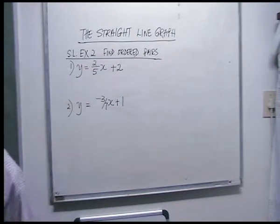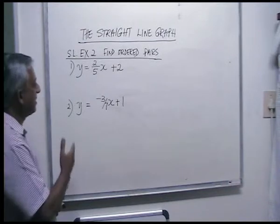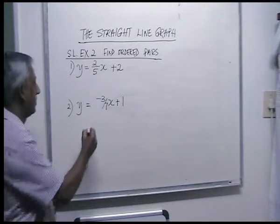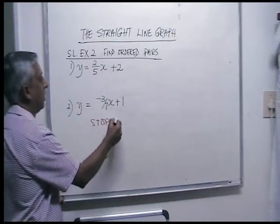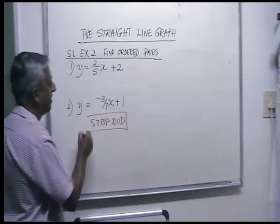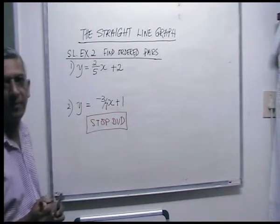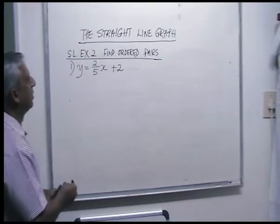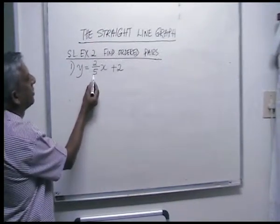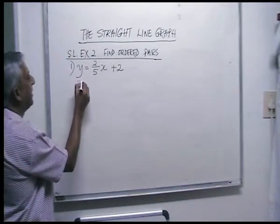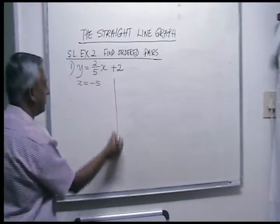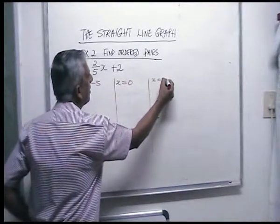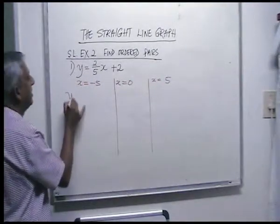Try them. Stop the DVD, work it out, and come back and I will mark them for you. For number one, you're a wise student — you see five here, so let x be minus five, x be zero, and x be five.